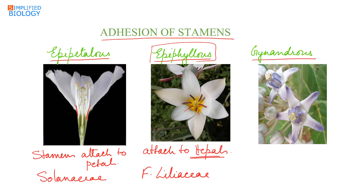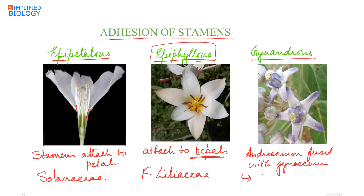Gynandrous means the androecium or the stamens are fused with the gynoecium — that is, the stamens are fused with the pistil or carpel. This is seen in case of Calotropis.